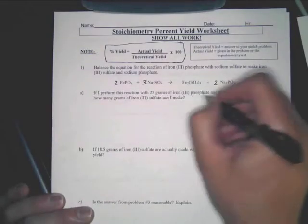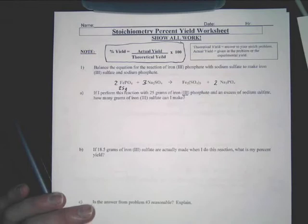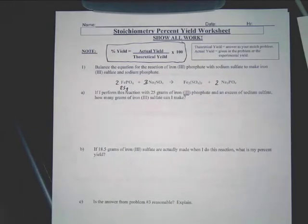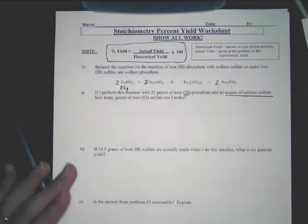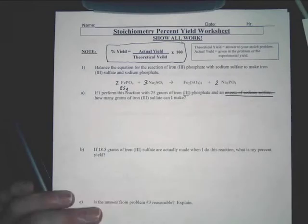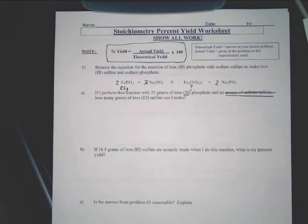So you're going to do 25 grams of iron(III) phosphate. That is this. Now remember, this Roman numeral 3 all it does is just telling you the charge on iron. It does not affect the formula at all. And then we have excess sodium sulfate. What does excess mean? Don't worry about it now. It means you ignore it basically. And then it says, how many grams of iron(III) sulfate can you get?